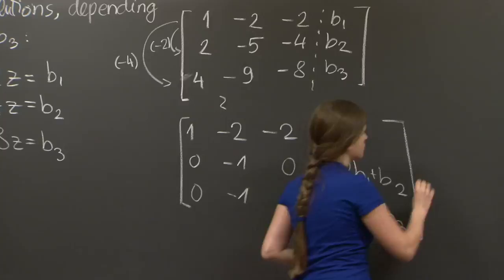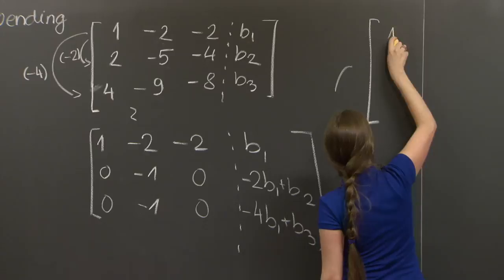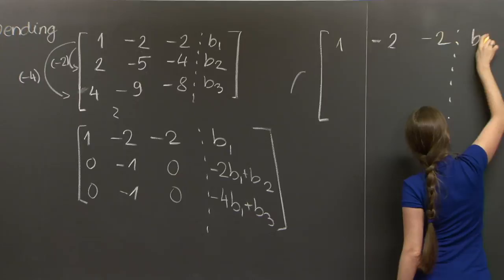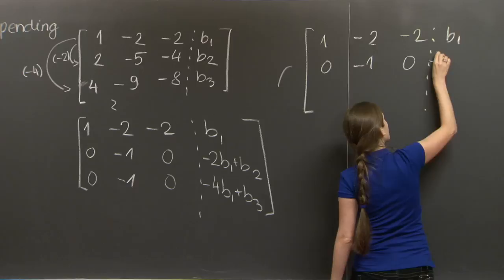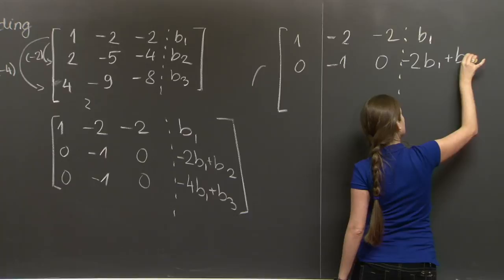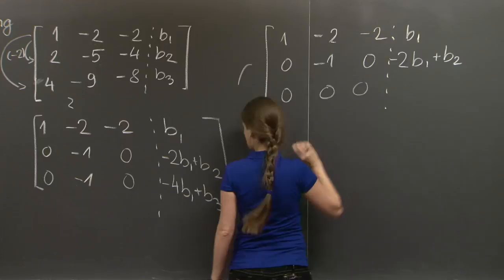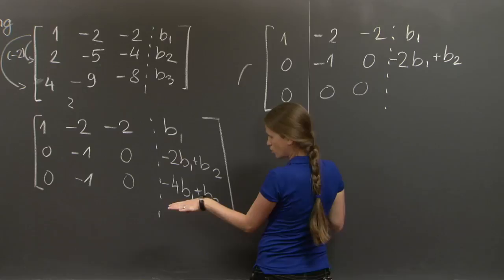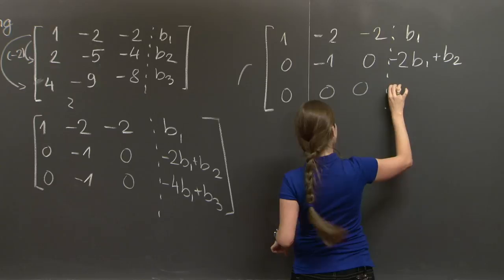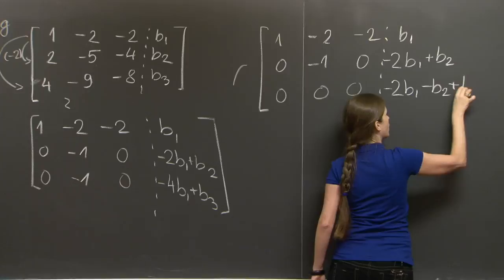And you can already see that something's going to happen here. But let's do one more step. So eliminating further, we get 1 minus 2 minus 2 b1, 0 minus 1, 0 minus 2 b1 plus b2. And in the last row, we replace it with the last row minus the second row. And we get 0, 0, 0 minus 4 b1 plus 2, or so minus minus 2 b2 is minus 2 b1, minus b2, and plus b3.